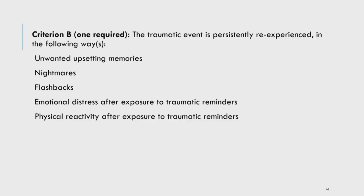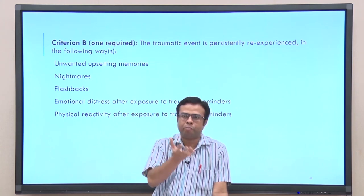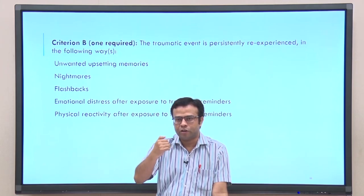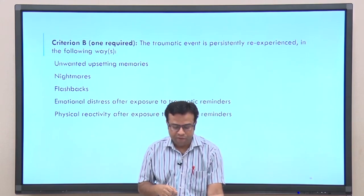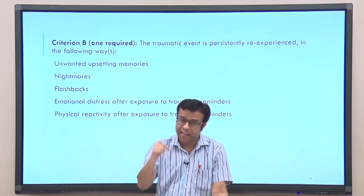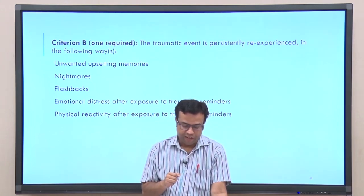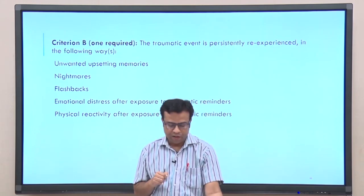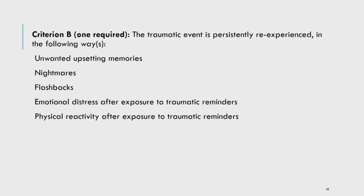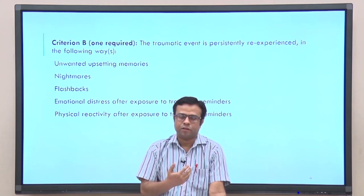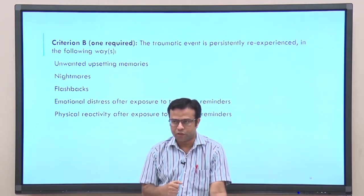Criterion B says the traumatic event is persistently re-experienced. One of the major symptoms of PTSD is re-experiencing the traumatic event persistently — for example, after an accident, it is not going out of your mind. You continuously re-experience the traumatic event in the form of unwanted upsetting memories coming back again and again, nightmares about the traumatic events, flashbacks, emotional distress after exposure to traumatic reminders, and physical reactivity after exposure to traumatic reminders. At least one of these re-experiencing symptoms is required.